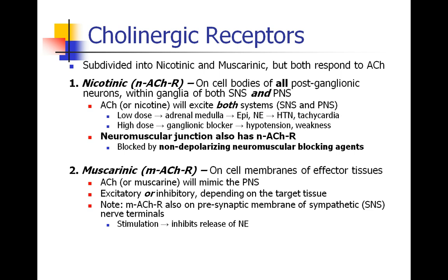Muscarinic acetylcholine receptors also exist on the presynaptic membrane of the sympathetic nerve terminals. When these get stimulated, it inhibits the release of norepinephrine. This is sort of a competitive feedback loop where releasing acetylcholine in the cholinergic system goes back and inhibits the release of norepinephrine from the adrenergic system.